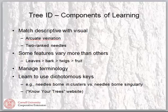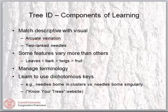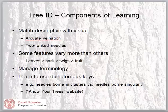Tree identification necessarily uses terminology we don't use in ordinary conversation — words like 'arcuate,' 'venation,' or 'two-ranked.' As you're learning, you'll be prioritizing how deeply to go into the glossary of tree identification terms. Finally, you'll need to learn how to use dichotomous keys — a series of pairs or couplets of statements where you make a decision between one or the other, eventually leading you to a final conclusion about what species you have.